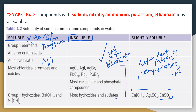The SNAPE rule suggests some ions are always soluble — S stands for sodium, and then N-A-P-E. These are ions that at a quick glance you can tell are soluble. They belong in the first column of the solubility table. Become familiar with this table: the first column means 'do not form precipitates,' the second column means 'these substances do form precipitates.'